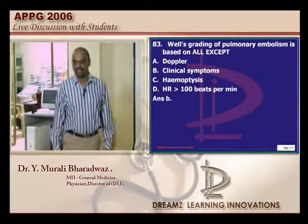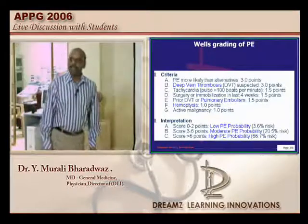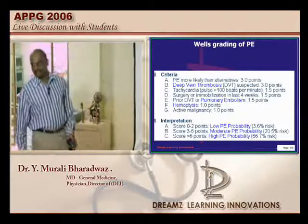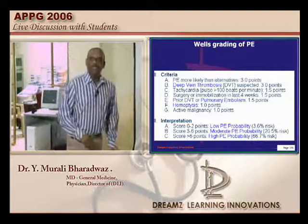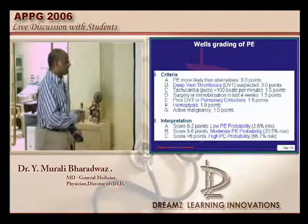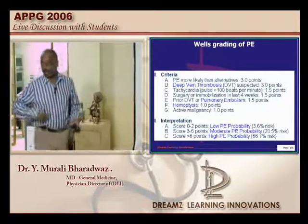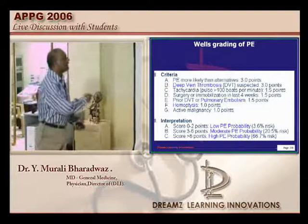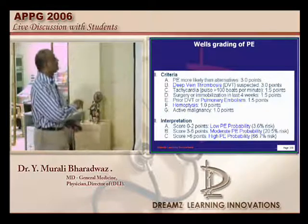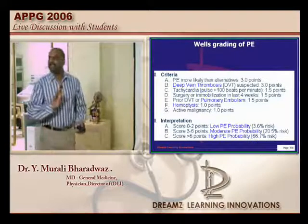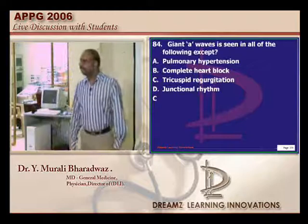Let's go to the next question — pulmonary embolism. What is the Wells grading in pulmonary embolism? There are about 7 criteria: if pulmonary embolism is more likely than the alternatives, if DVT is suspected and shown by Doppler, tachycardia, surgery or immobilization, prior DVT or pulmonary embolism, presence of hemoptysis, and active malignancy which is prothrombotic. The Wells score grades the probability of developing pulmonary embolism. Note that Homan's sign and other clinical symptoms are not included in the Wells grading.